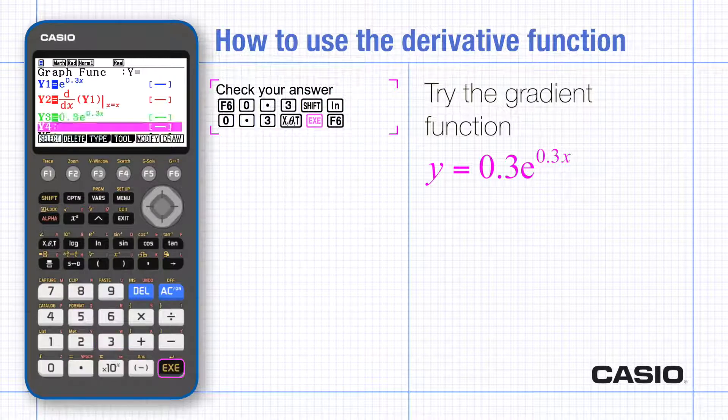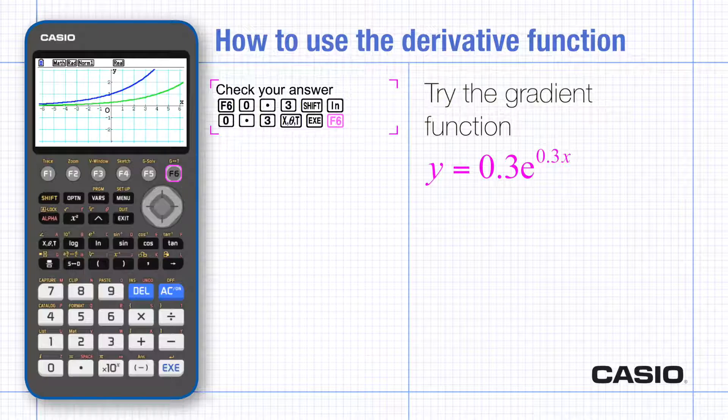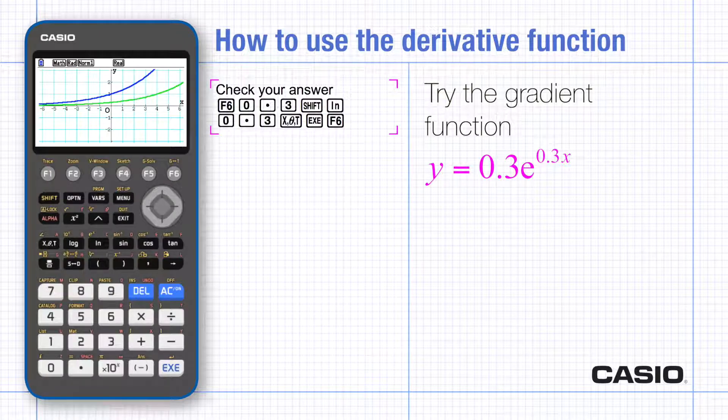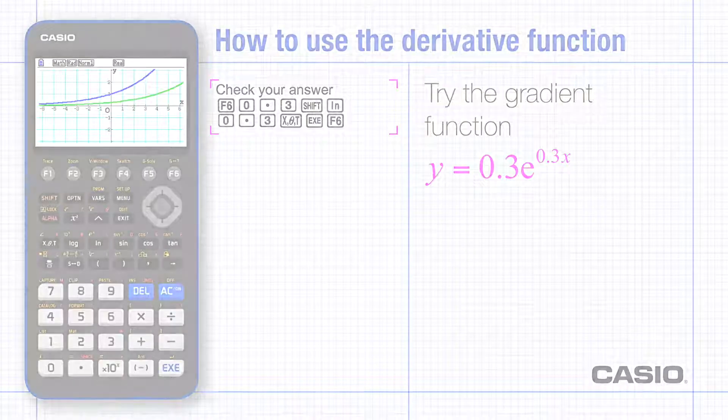Execute and notice that the graphs coincide so there's now plenty of evidence that your answer is correct. You could use this as a checking strategy for all your differentiation questions.